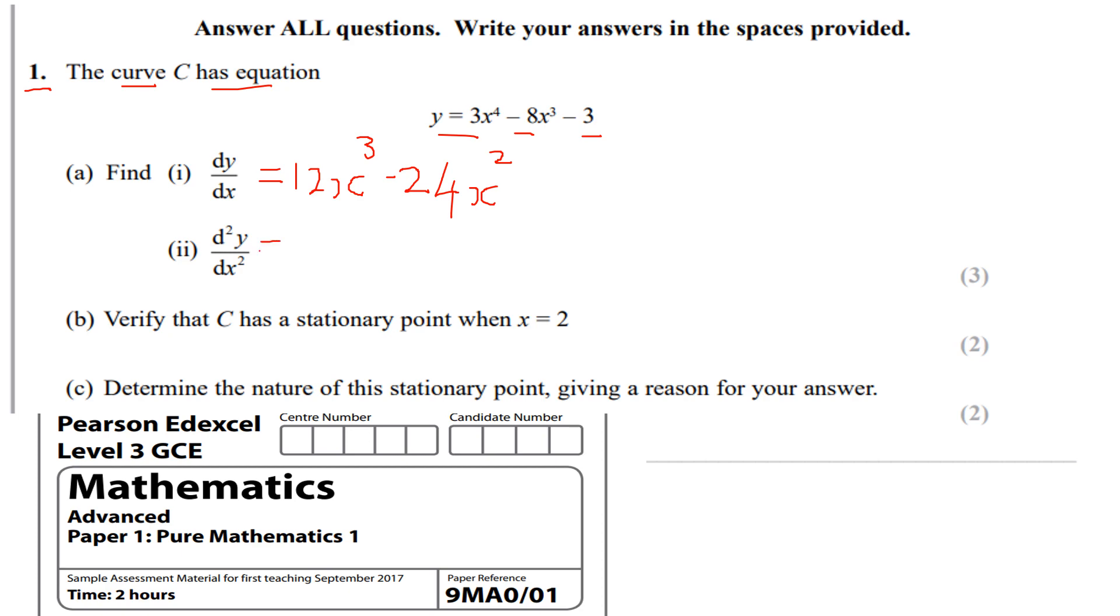Differentiate it again, so differentiate dy/dx, that'll be d²y/dx² equals 36x squared minus 48x. So that was obviously worth 3 marks. Well done if you got that, good work.